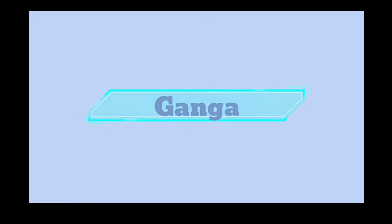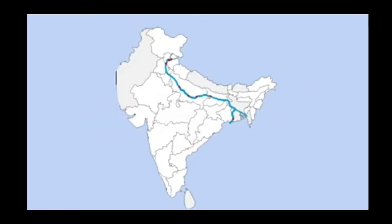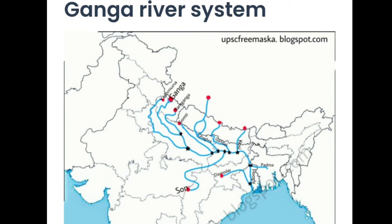Next is the Ganga. We can see the Ganga River system. The Ganga River system starts as the Bhagirathi from the Gangotri Glacier. It is joined by the Alaknanda River at Devprayag in Uttarakhand to form the Ganga. Its length is over 25 km.